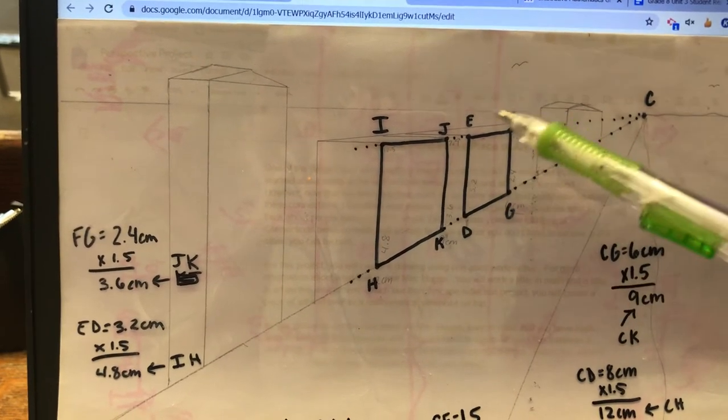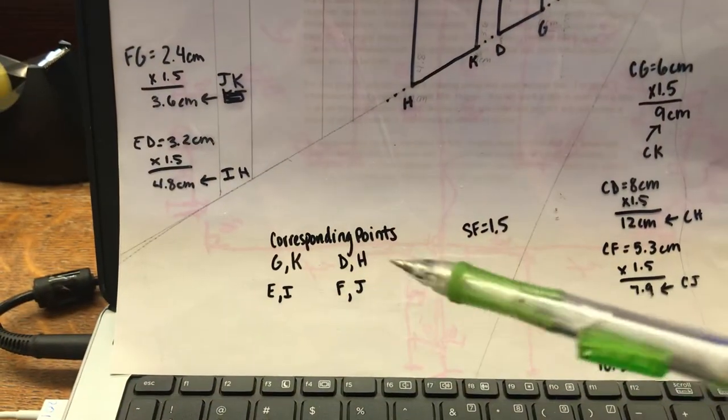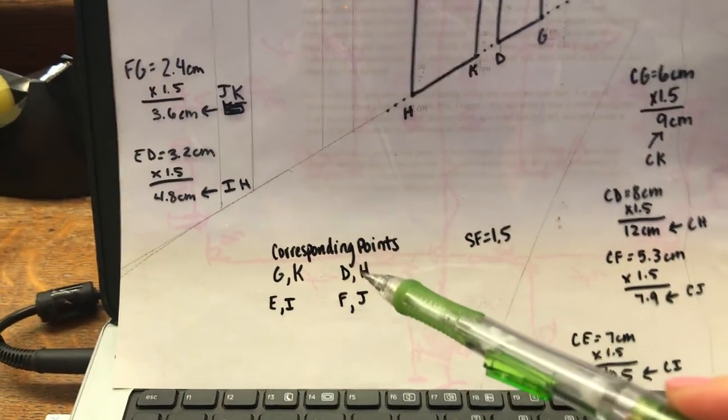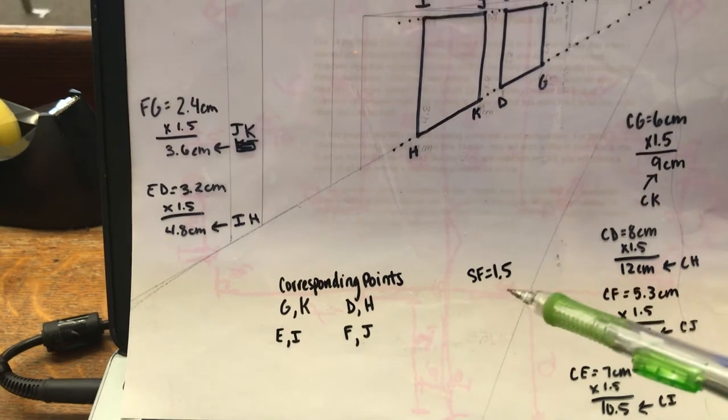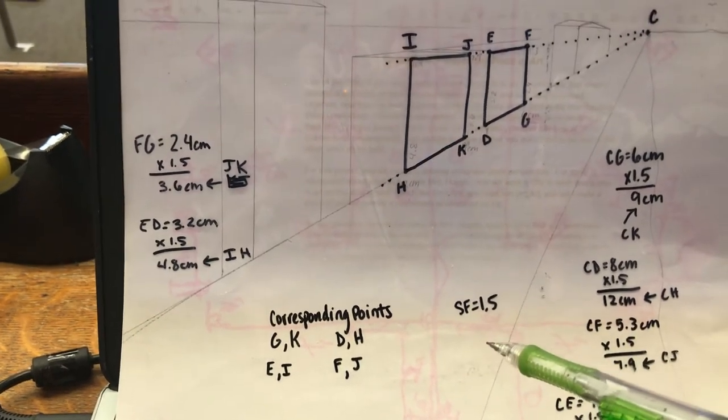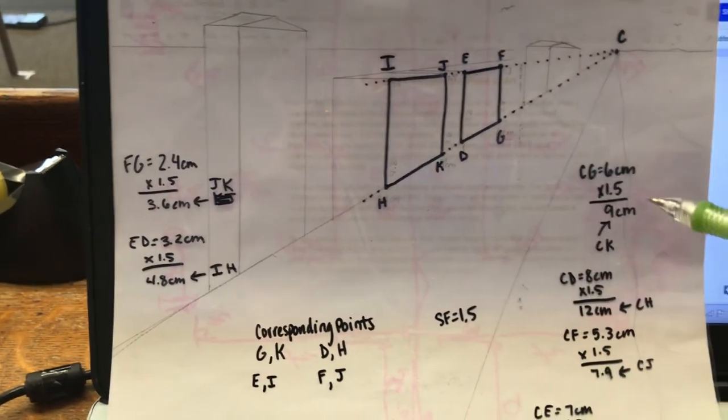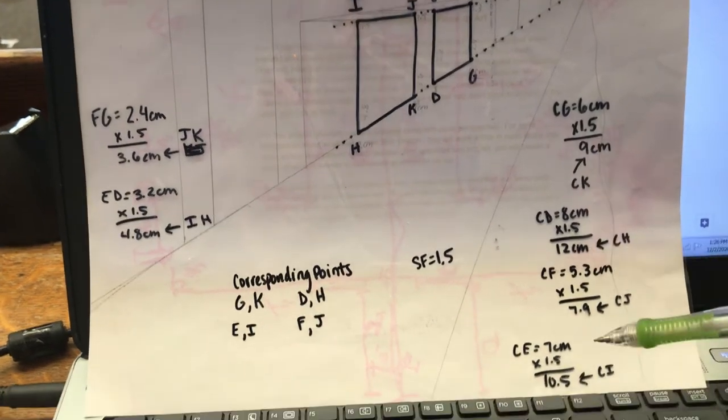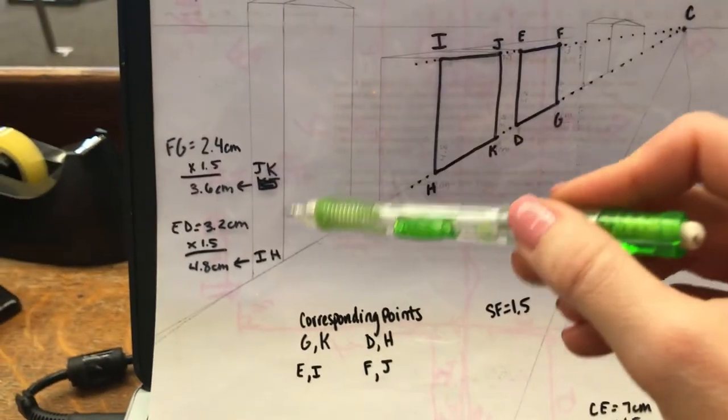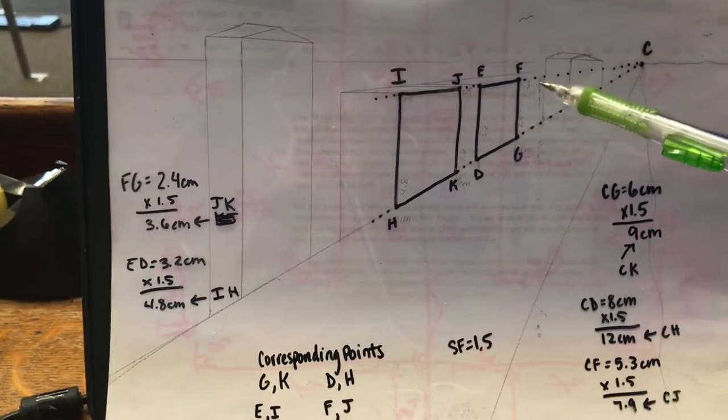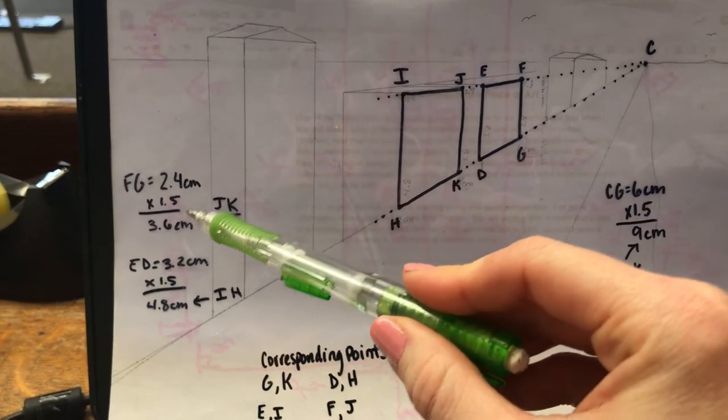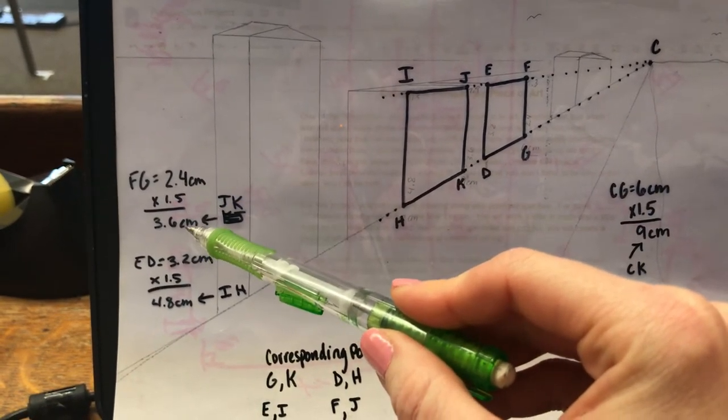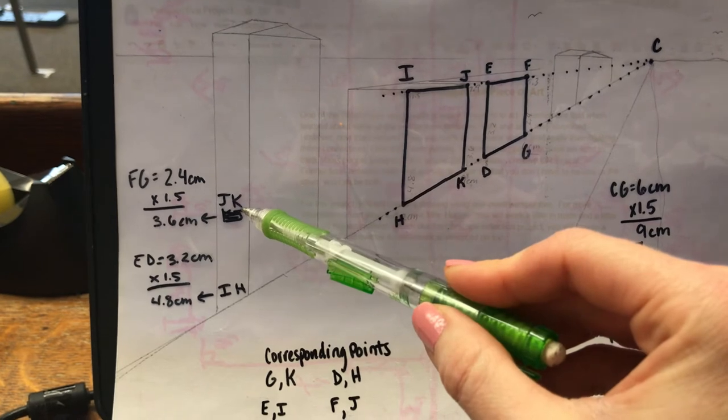And notice I didn't outline the whole entire building. I didn't do the side or the roof or anything. I just did the quadrilateral that makes up the front of the building and I labeled all of the points. Then I listed the corresponding points down here, you will do that too. I indicated what my scale factor was, you will do that too.